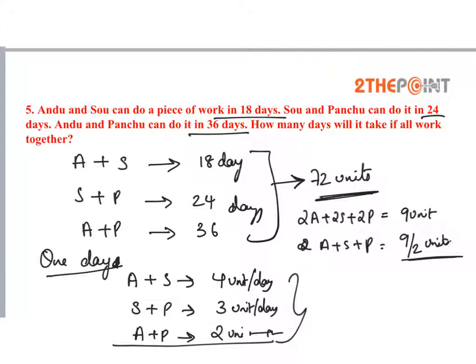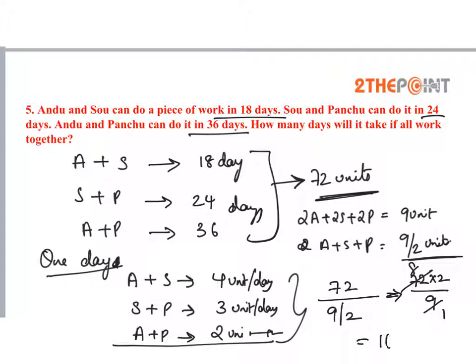This is the total work done by all three in one day. To find how many days they take to complete the work, that is total work divided by work per day: 72 divided by (9/2), which equals 72 multiplied by 2 by 9, giving 16 days. In 16 days they complete the total work.